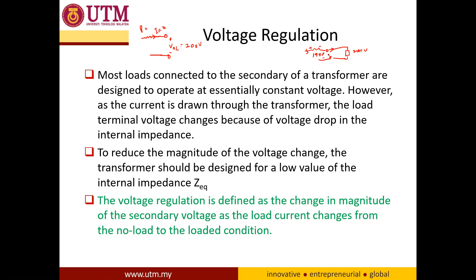So when you connect it with the rated load, this voltage is what we call the voltage full load. As you can see, there is a difference between voltage full load and no-load in terms of value — around 3 volts difference. The good transformer is one that actually has no difference even when it is not connected with the load versus when it is connected with its full load. We know that this internal resistance cannot be avoided, so it's good to have a transformer with a lower voltage regulation percentage.